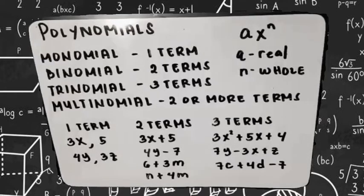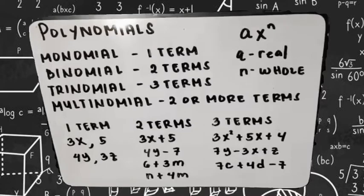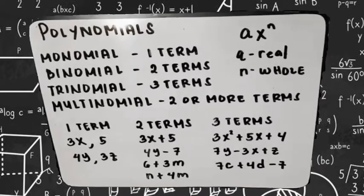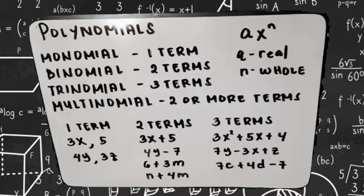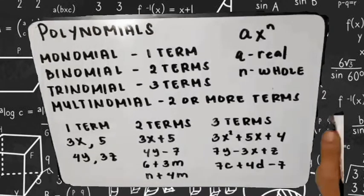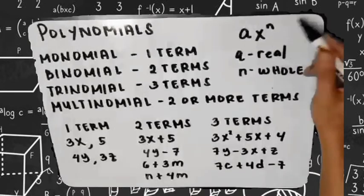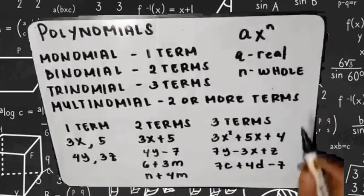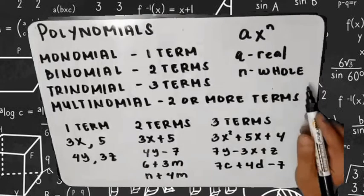If we say polynomial, according to Merriam-Webster, it is a mathematical expression of one or more algebraic terms, each of which consists of a constant multiplied by one or more variables raised to a non-negative integral power. From another source, a polynomial of degree n in x is an algebraic expression that contains a specific number of terms, each of which is of the form ax raised to n, where a is a real number and n is a whole number.